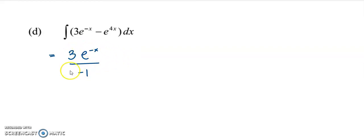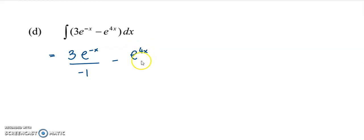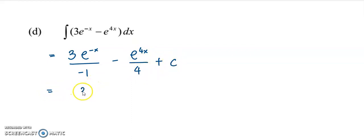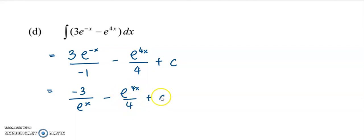The coefficient of x for e to the power of negative x is negative 1. We have done the integration for the first term. For the second term, to integrate e to the power of 4x, we copy down 4·e to the power of 4x and divide by the coefficient 4, plus constant C. Simplifying, we have negative 3 over e to the x minus e to the power of 4x over 4, plus C.